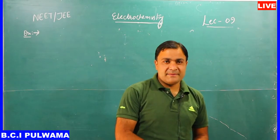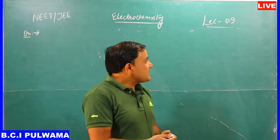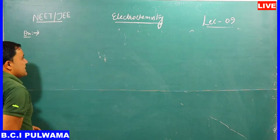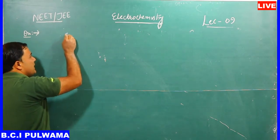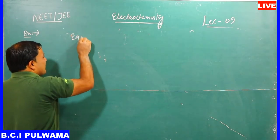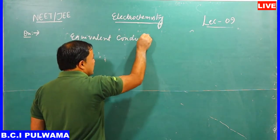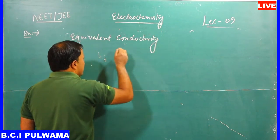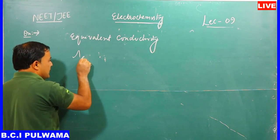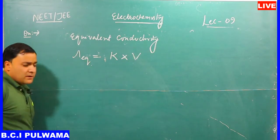Assalamu alaikum students, welcome back to the series of online video lectures. This is lecture number nine on electrochemistry. In the previous lecture, we defined some terms — equivalent conductivity — and we came to the conclusion that λ_eq (equivalent conductivity) is equal to κ multiplied by V_equivalent.